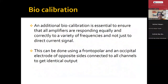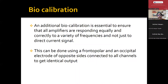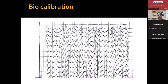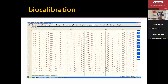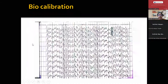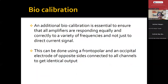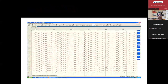The next step is biocalibration. In addition to mechanical calibration, biocalibration is essential to ensure all amplifiers respond equally and correctly to a variety of frequencies — not just to the current signal. This is done by using a frontopolar and an occipital electrode of the opposite side, both connected to all channels to get identical input. This is the biocalibration of an analog machine and this is the biocalibration of a digital machine. FP2 is connected to O2, and then these are connected to all channels to get identical output.